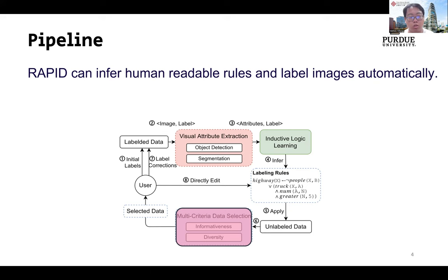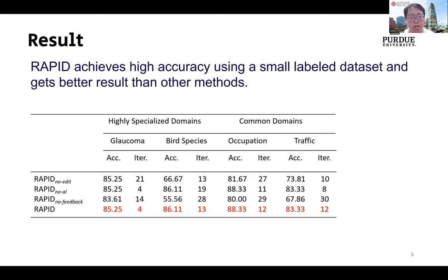RAPID achieves high accuracy compared with deep learning-based methods, especially on highly specialized domain datasets. For glaucoma, RAPID only leverages 12 labeled images to achieve 85% accuracy in four iterations, and for bird species, it leverages 39 images to achieve 86% in 13 iterations.